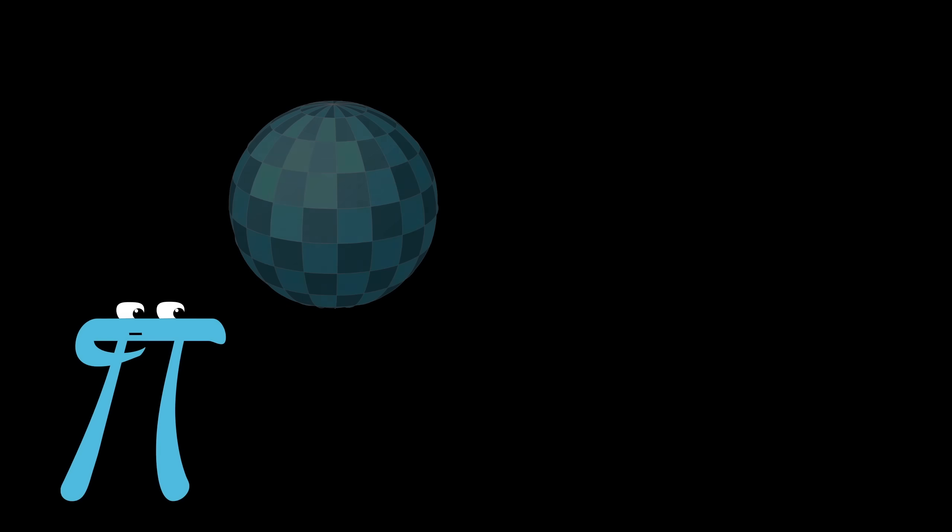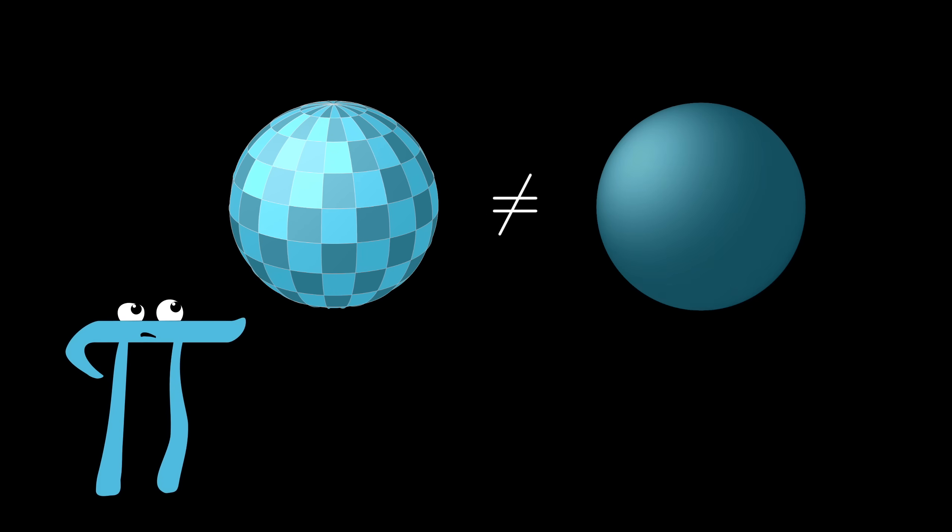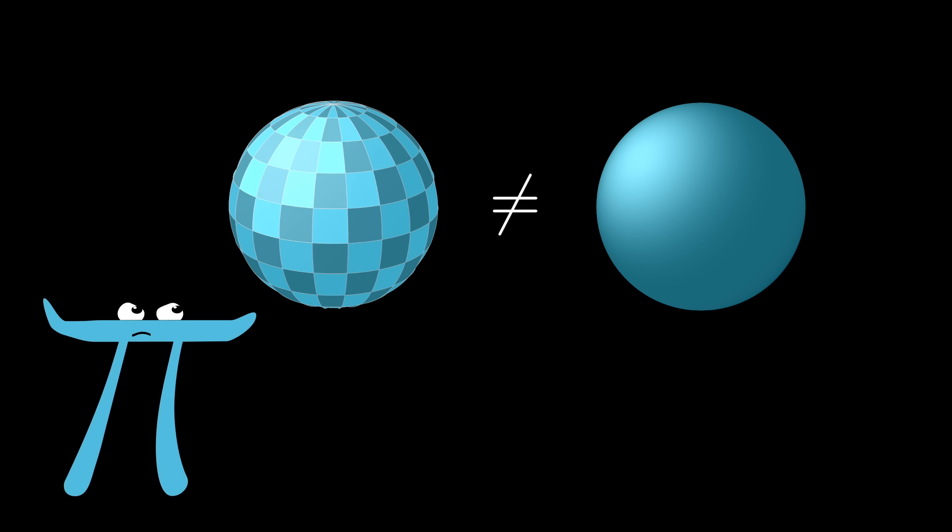Now, if you're really thinking critically, you might still not be satisfied that this shows us what the surface area of the sphere is, because all of these little rectangles only approximate the relevant areas.